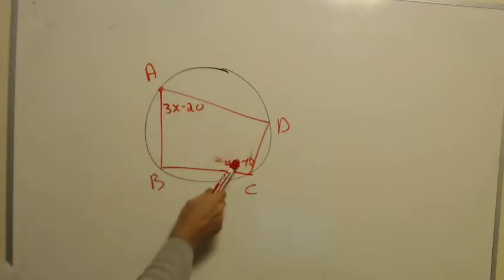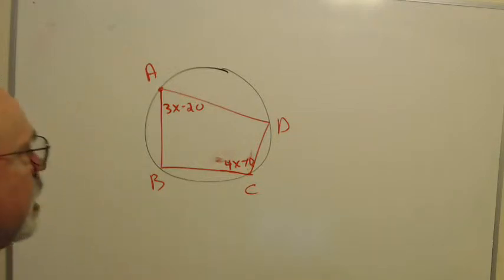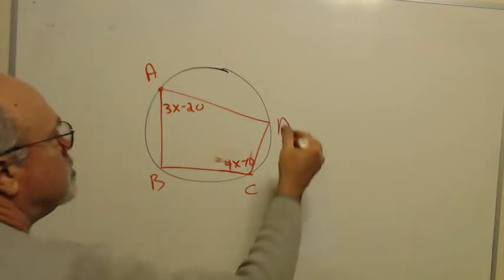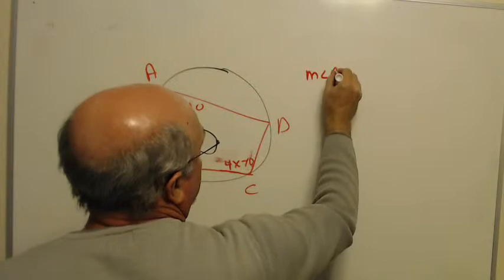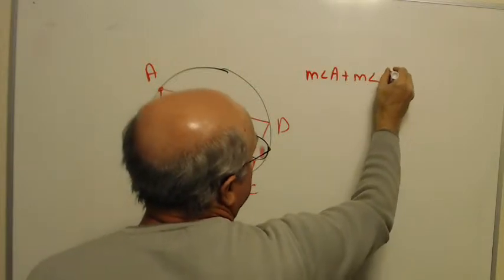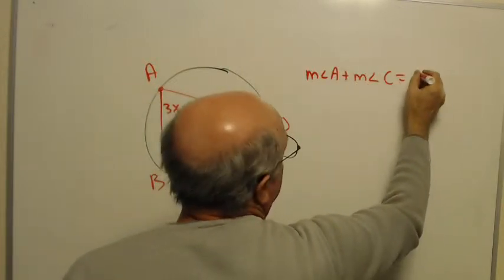These are a pair of opposite angles, and we have a theorem that says the opposite angles of inscribed quadrilateral are supplementary. That means in this picture that the measure of angle A plus the measure of angle C is equal to 180.